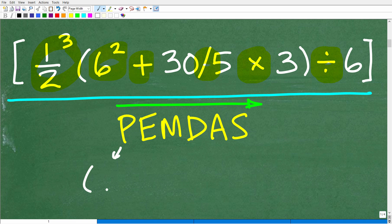Okay. So, P stands for parentheses. E stands for exponents or powers. M stands for multiplication. D stands for division. A stands for addition. And S stands for subtraction.